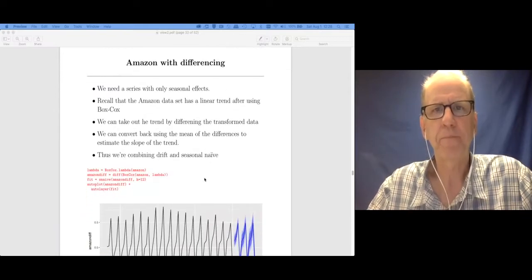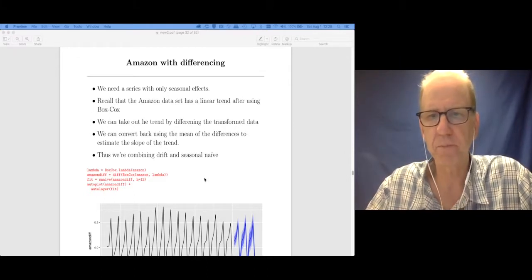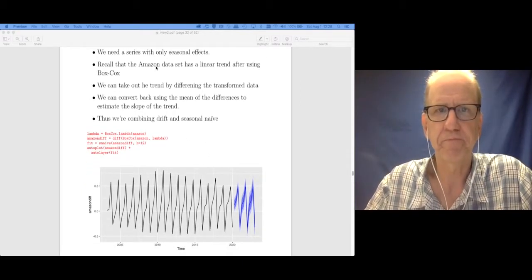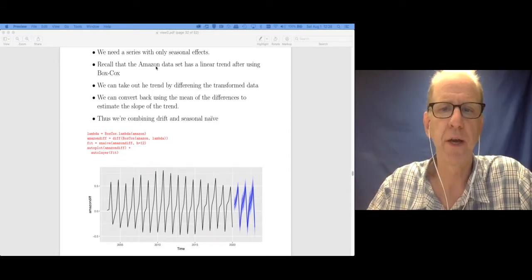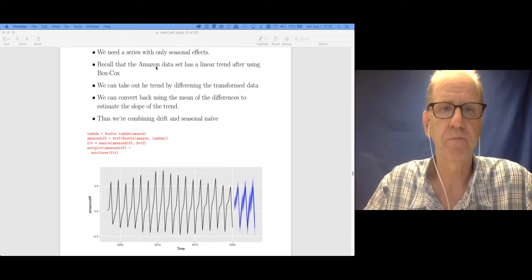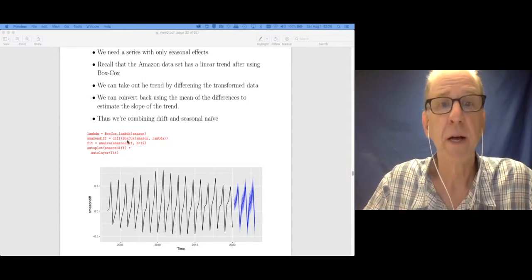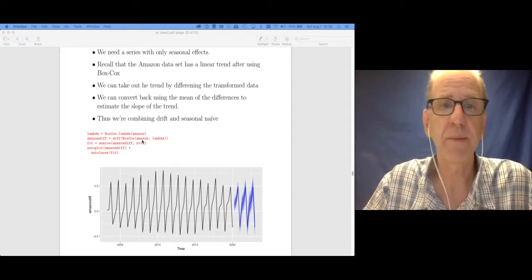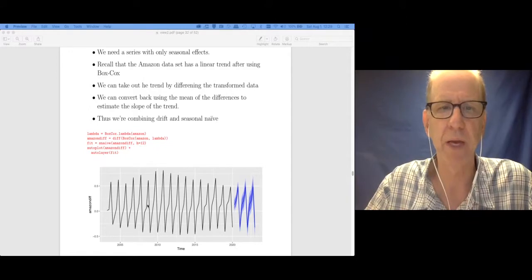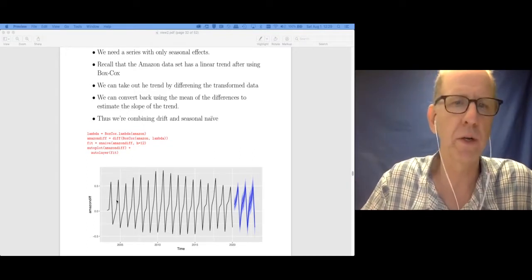To give us an example, I said that this works very well if you only have a seasonal effect. We don't really have a data set where we only have a seasonal effect. What we did see though is if we use the Amazon data set with a Box-Cox transformation, we basically get a linear trend, and we know that we can remove a linear trend with first differences. So let me show you how I'm going to cook up an example for us. I'm going to take the Box-Cox transformation of the Amazon data set and do first differences. The trend is almost perfectly linear then, and so what you'll see is we have strong seasonality as we've seen before.